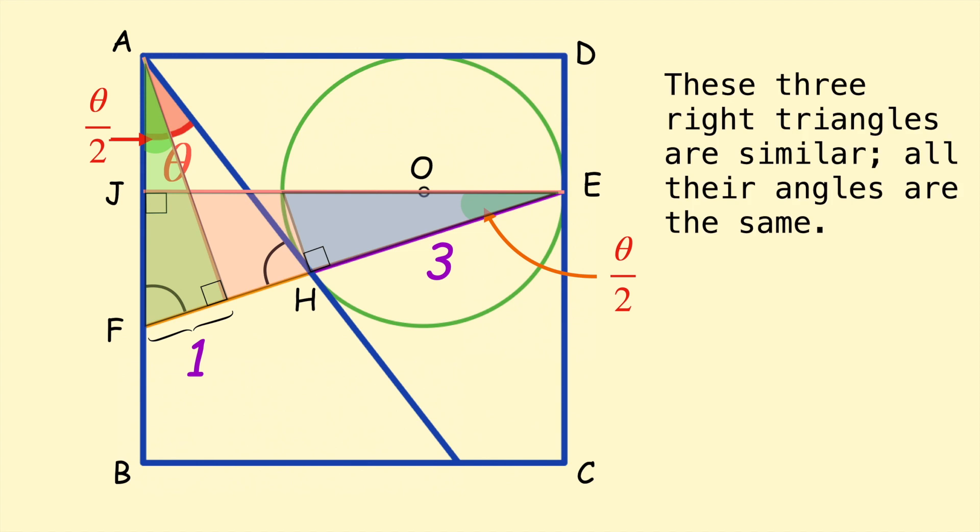A few other things to note: we'll let JF equal A. So we're going to let this length here equal A. So then AF equals R plus A. So AJ is R, so AF is R plus A. Also JE, which is the same as the side length of the square, that's equal to AB, which is equal to 2R plus A.